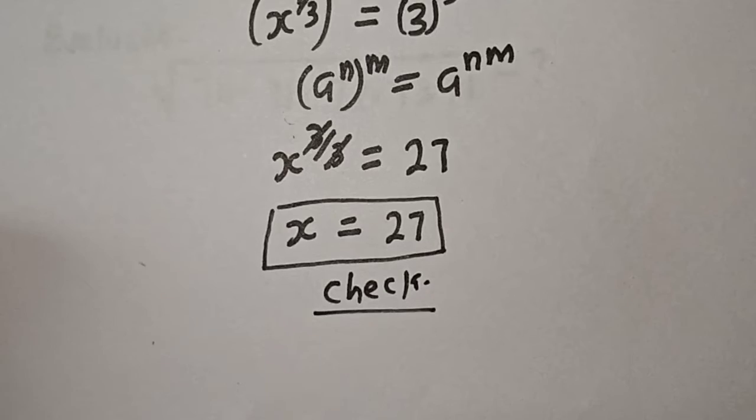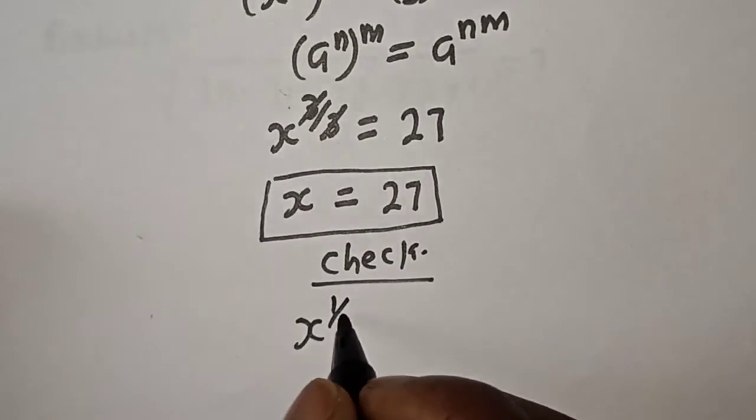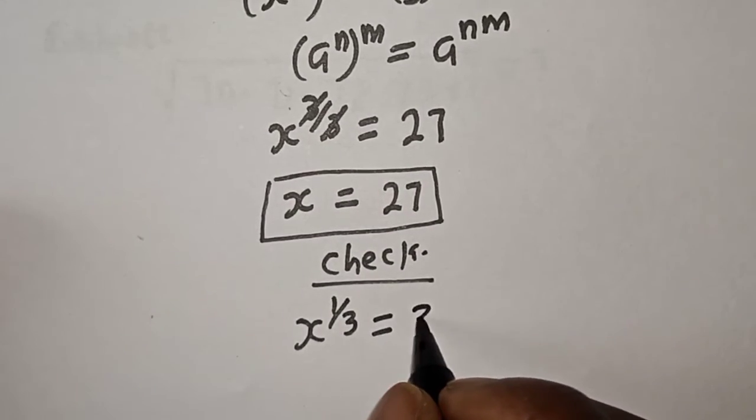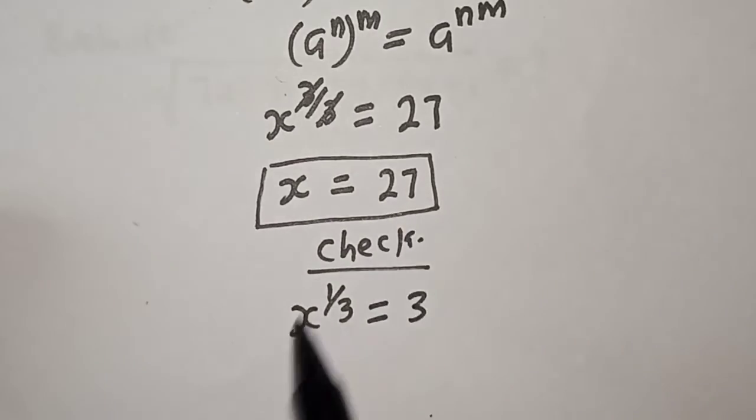We have the given equation. x raised to power 1 over 3 is equal to 3. But x is 27.